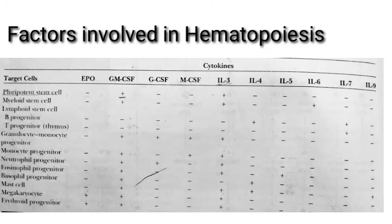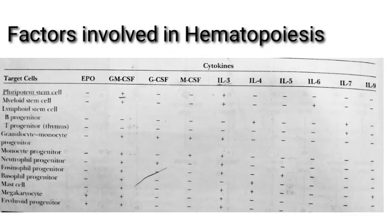Certain factors are responsible for the process of hematopoiesis. Specifically: erythropoietin is responsible for erythrocytes; thrombopoietin is responsible for thrombocytes; interleukin-5 is responsible for eosinophil progenitors; interleukin-9 is for mast cells; and interleukin-4 is for basophils and mast cells. After understanding the regulation of hematopoiesis, we need to know the maturation and survival times of blood cells and platelets.